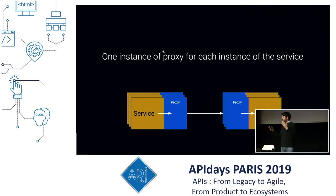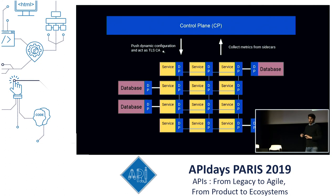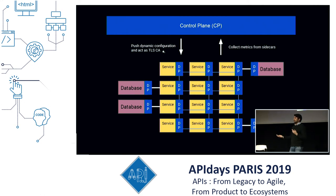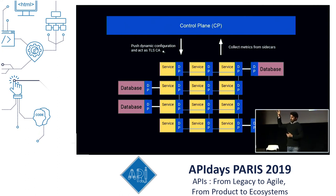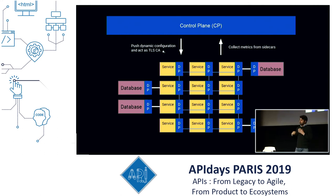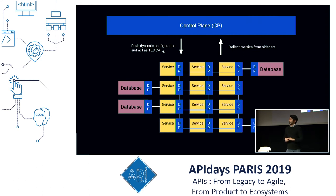One instance for each service. The control plane sits outside of this architecture to configure the data planes, so that if we want to implement a new mutual TLS policy, or a new observability policy, or a new routing policy, we do that on the control plane and then — in an eventually consistent way — we let the data planes update themselves. There are different data plane and control plane implementations you can explore, but all of them implement this basic architectural concept.